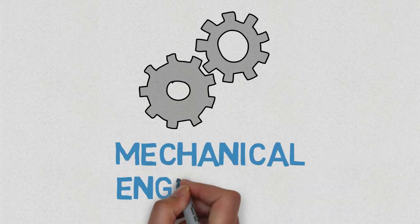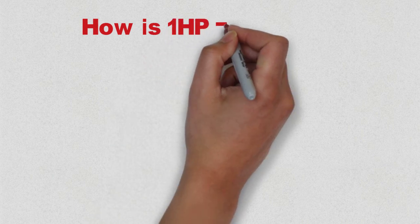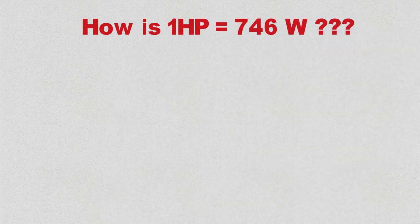Hey guys, welcome to mechanical engineering. Today we're going to talk about how one horsepower is equal to 746 watts.